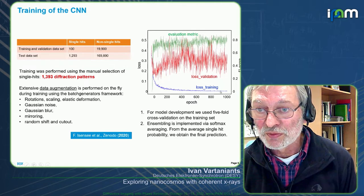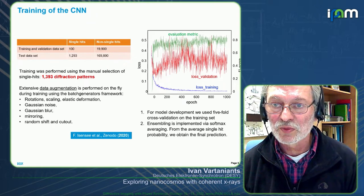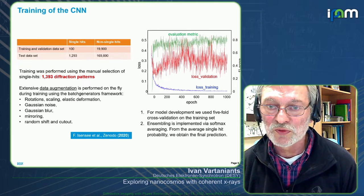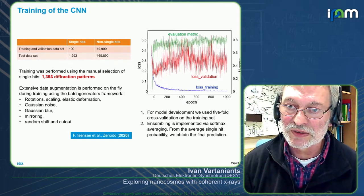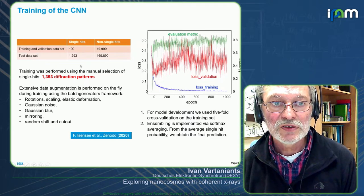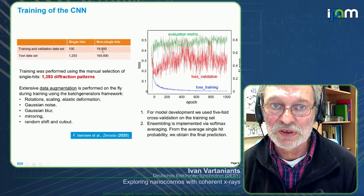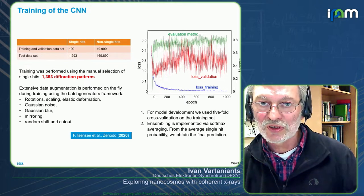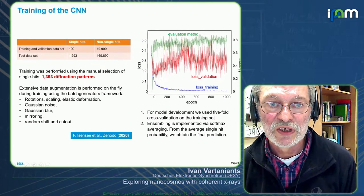Here is how the loss function was behaving. For training and validation, we used 100 single hits and about 20,000 non-single hits. This ratio was due to the fact that we have only a few single hits compared to a large number of non-single hits. That's why we decided to have this ratio, and then we had a test set.